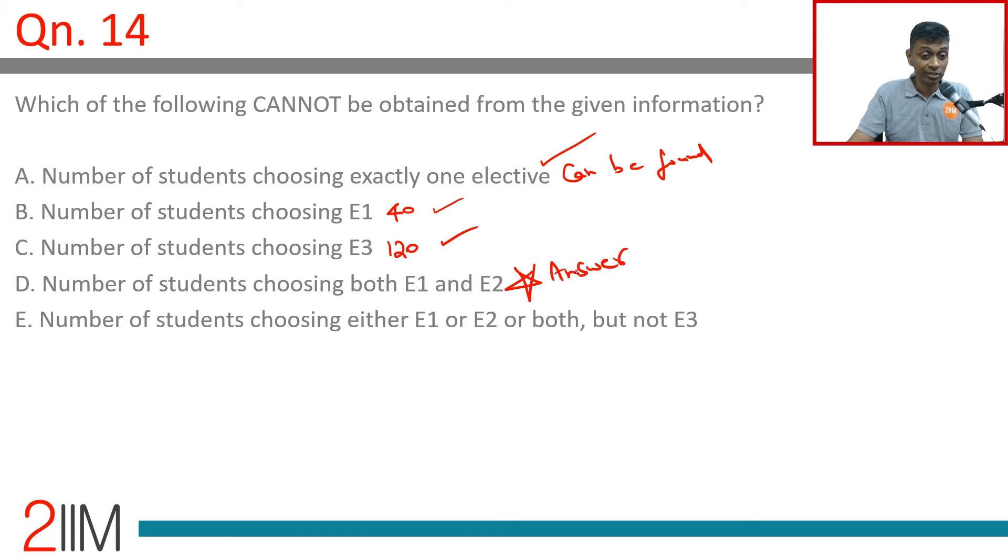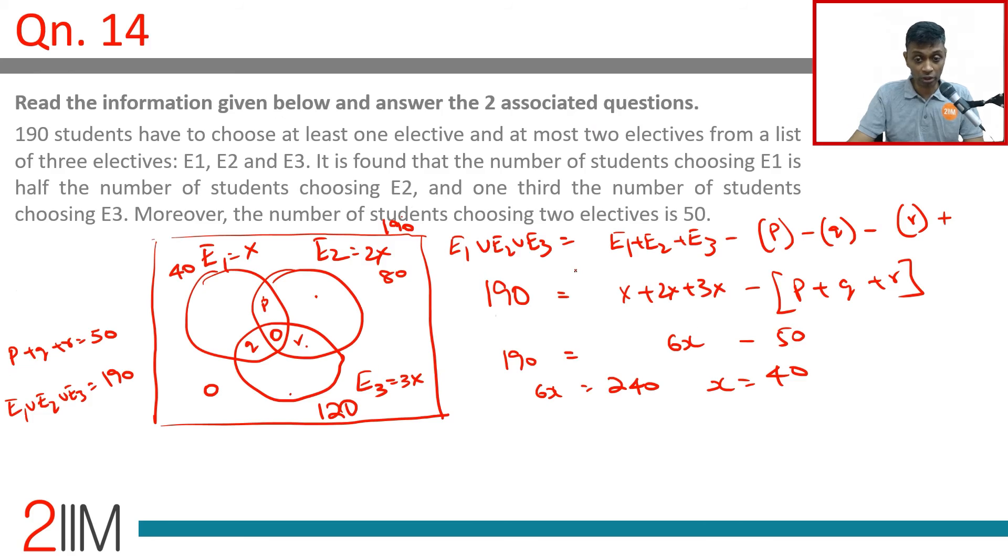Let's look at this: number of students selecting either e1 or e2 or both but not e3. E1 or e2 or both, so we're looking at this entire thing. But not e3, so leaving out this also, we're looking at this entire thing.